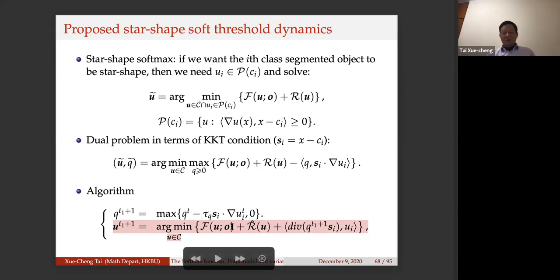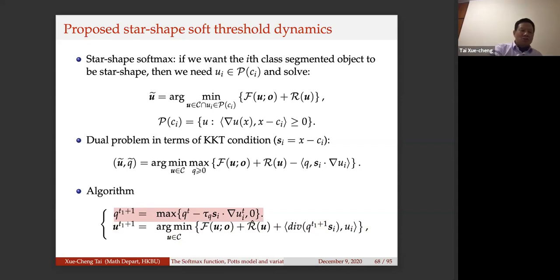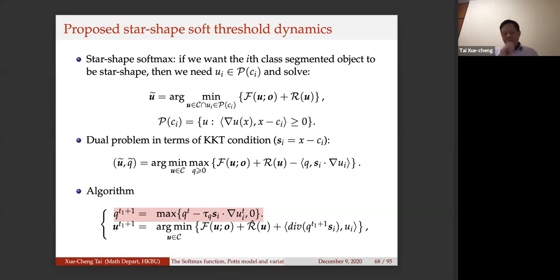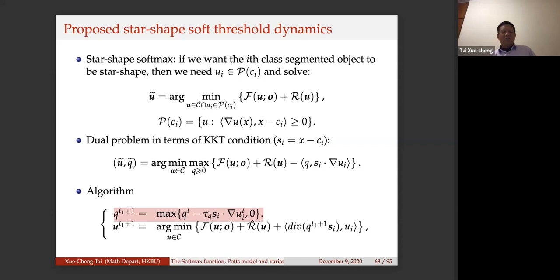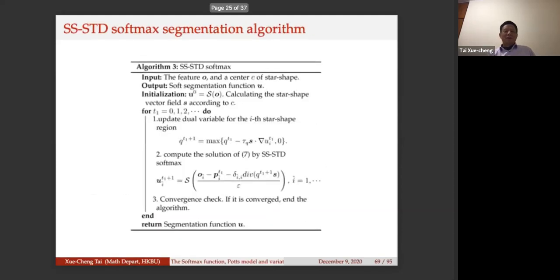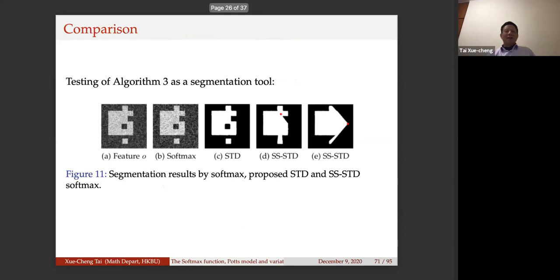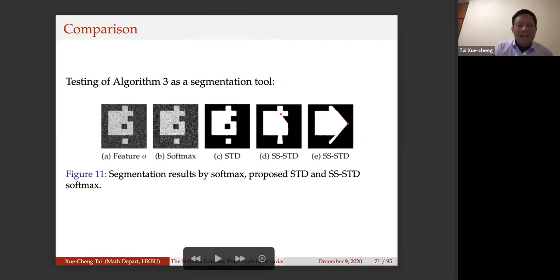Running a fixed number of iterations of these two steps — the u update (softmax) and the Lagrangian ascent plus projection — and placing this as the last layer in place of softmax guarantees that the output objects are star-shaped. We tested this idea to verify it actually works.